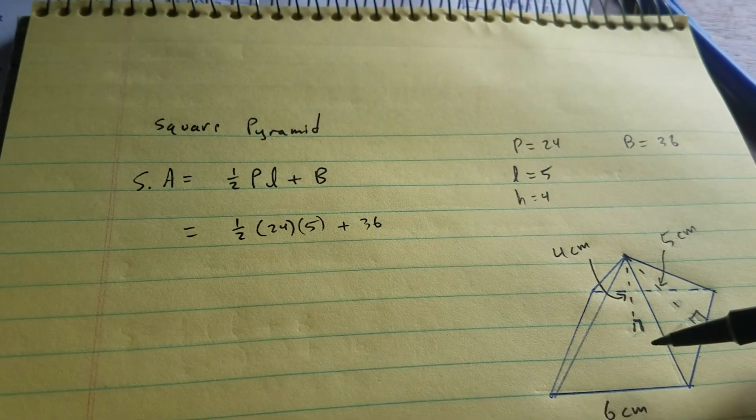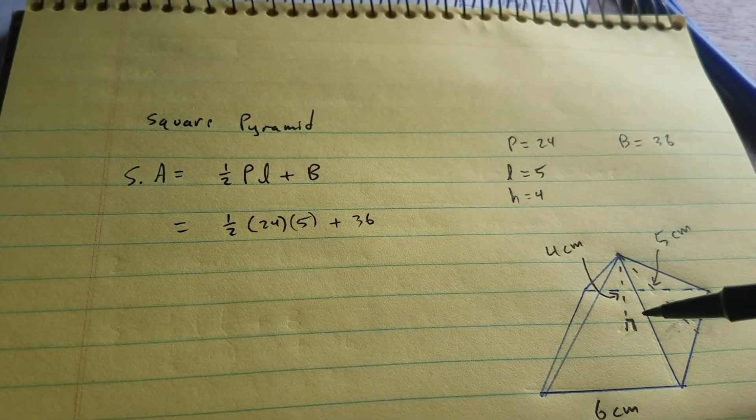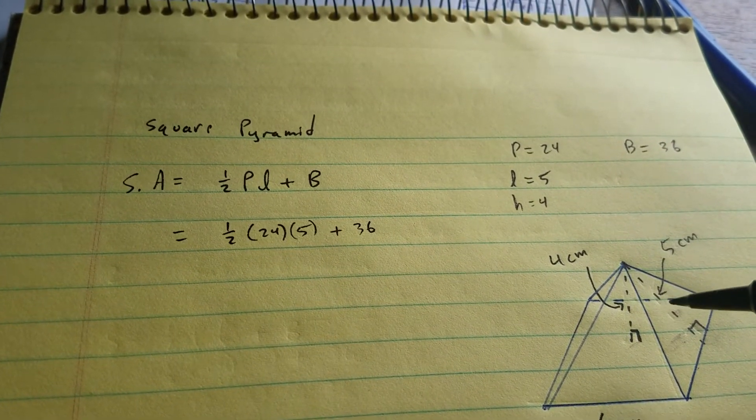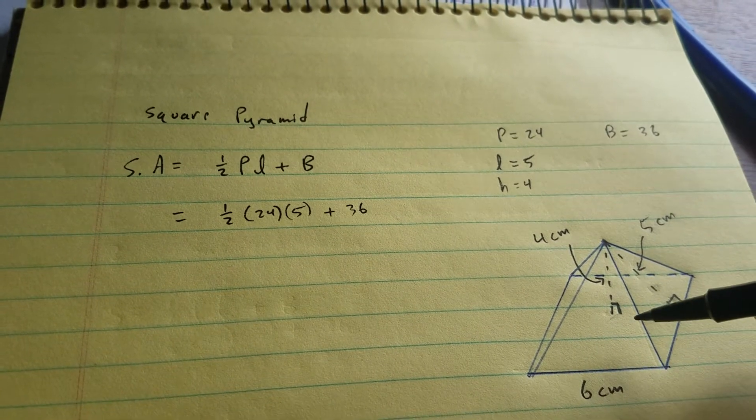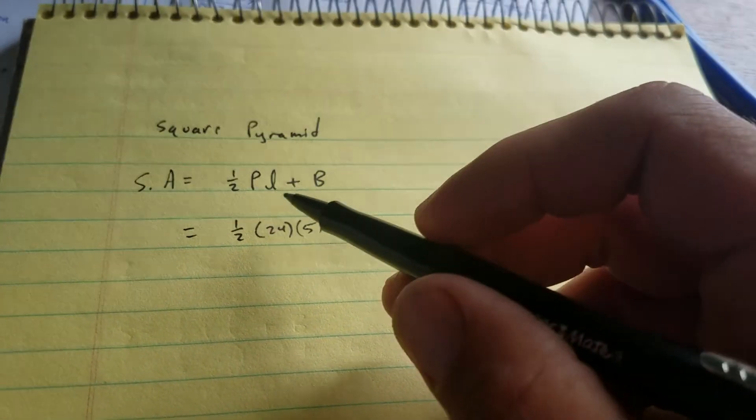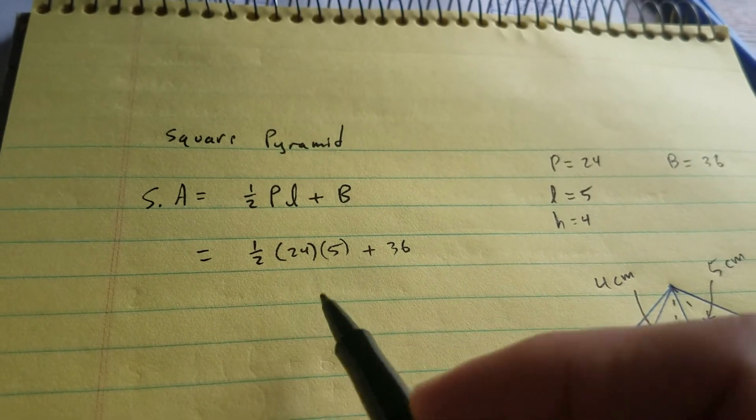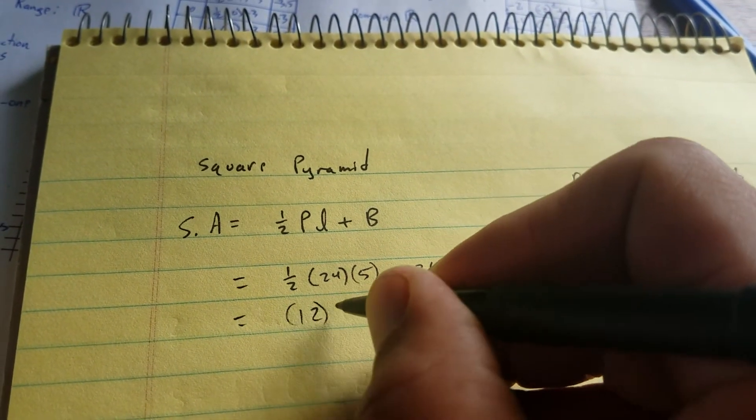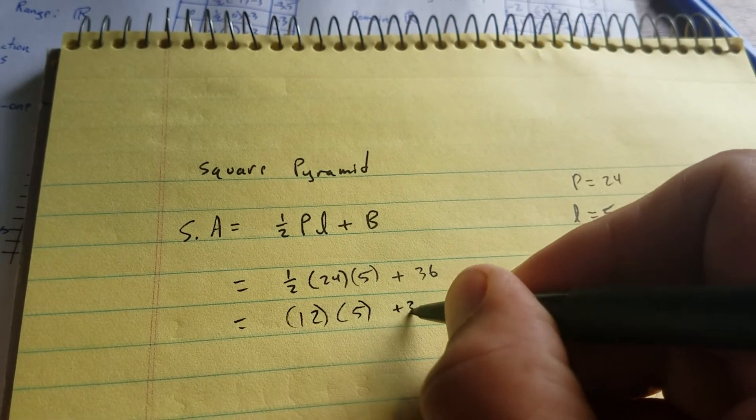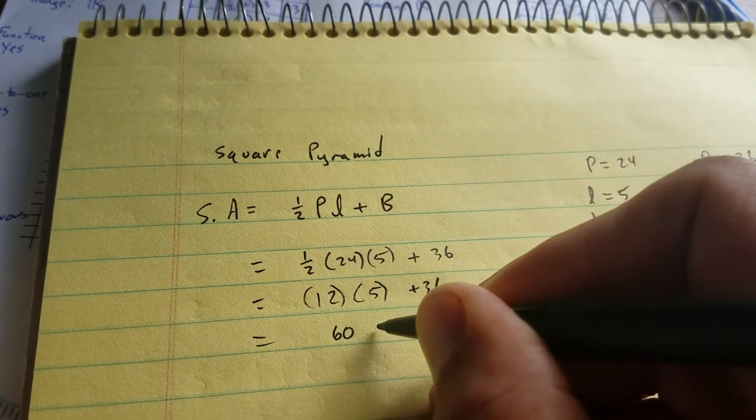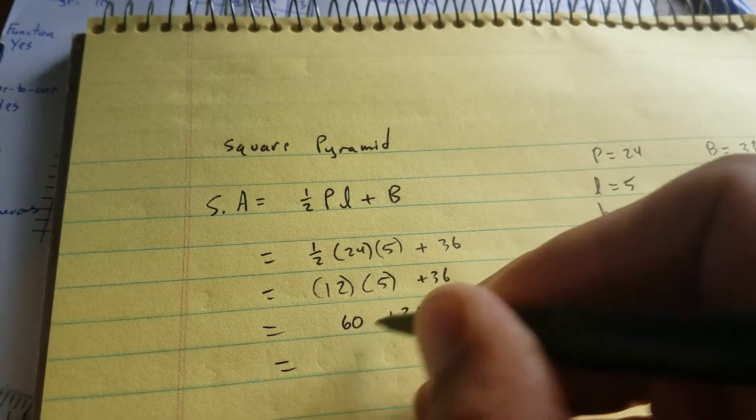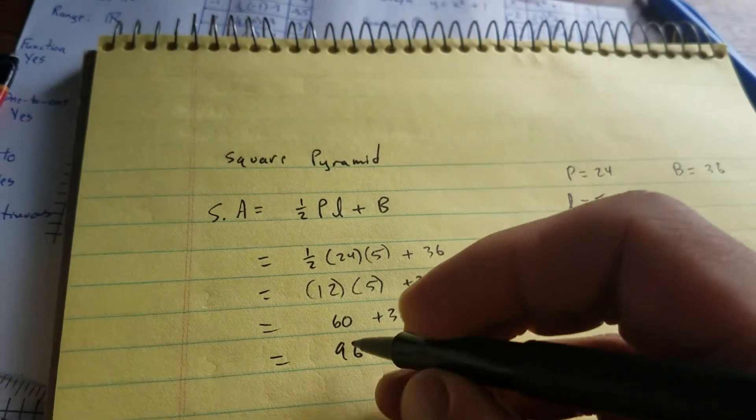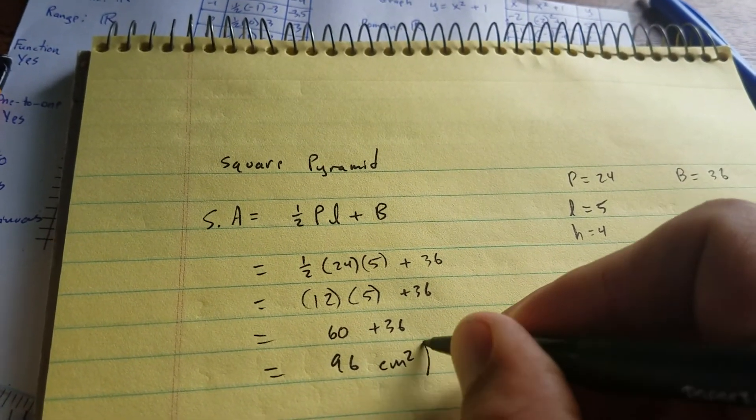You can solve surface area by doing the four individual triangles, adding those areas up, and then adding it to the area of the bottom if you prefer, or you can just use this method given in the book. One-half of 24 is 12 times 5 plus 36 equals 60 plus 36, and that is 96 centimeters squared. Area is always going to be squared.